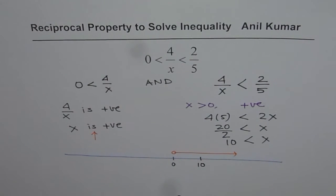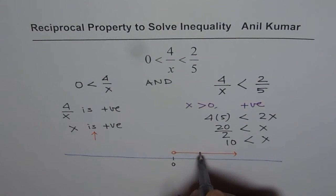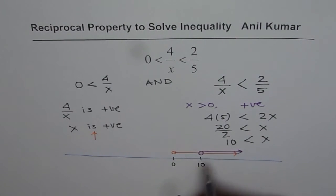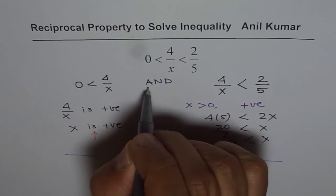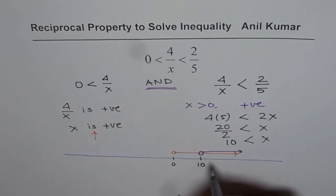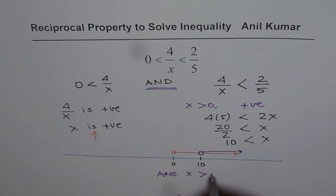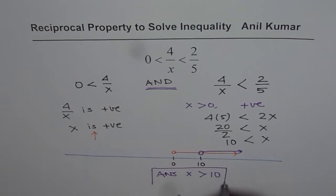Let's say this is 10 on our number line. The solution from the right side condition is x greater than 10. The condition between both parts is AND. Therefore, the final answer is x is greater than 10.